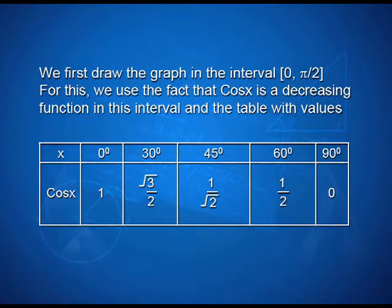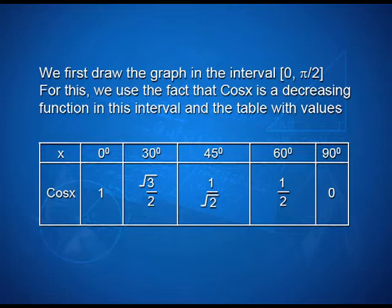Now let us take the graph of the function y = cos x. Since cos x is a periodic function with period 2 pi, it is sufficient to draw the graph in the interval 0 to 2 pi. We first draw the graph in the interval 0 to pi by 2 using the fact that cos x is a decreasing function in this interval. The table values are: cos 0° = 1, cos 30° = √3/2, cos 45° = 1/√2, cos 60° = 1/2, and cos 90° = 0.